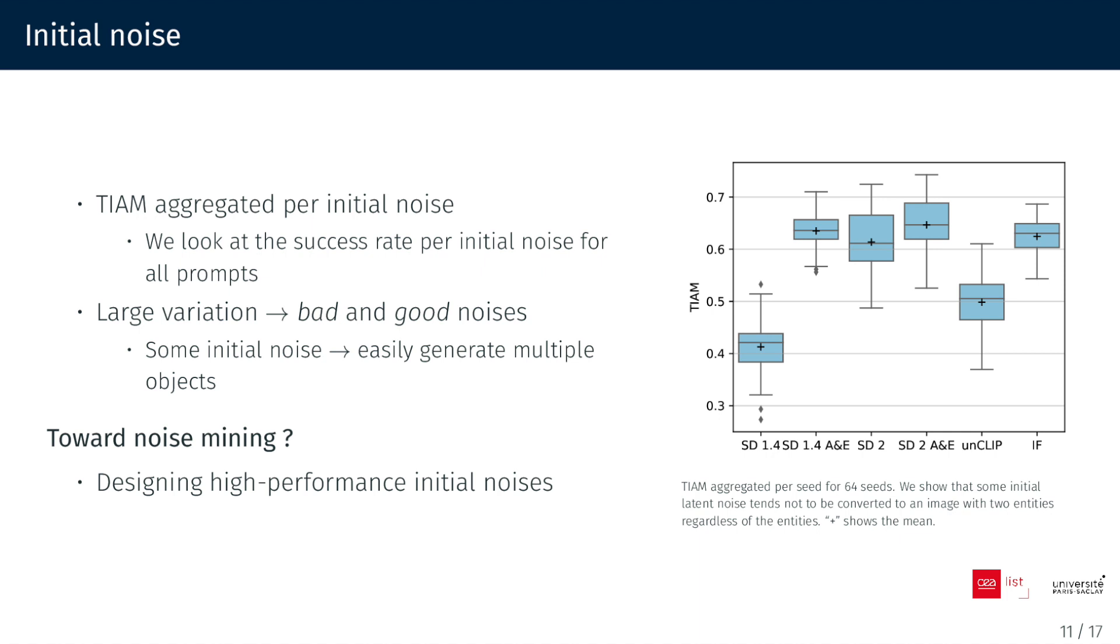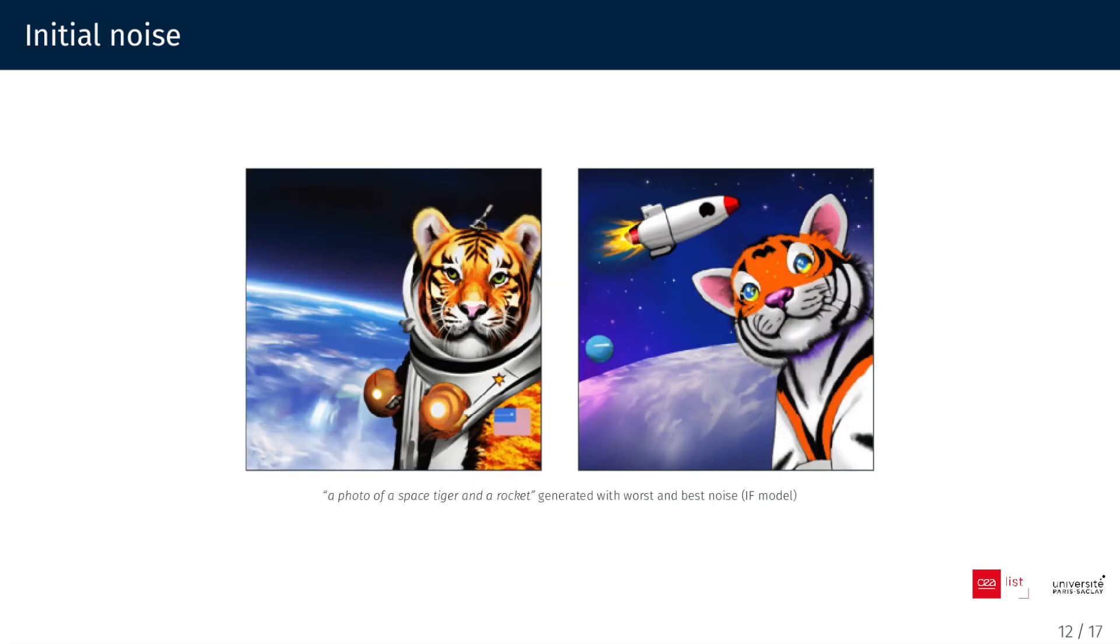Using a set of objects and a 2-object template, we generate images and aggregate TIAM scores per noise. By examining the success rate per initial noise across all prompts, we observe a significant variation in performance. Certain noises easily generate multiple objects. We can take advantage of this and select noises with superior performance. For example, observe the difference between images generated with our worst and best noise. The rocket doesn't appear in the first image.